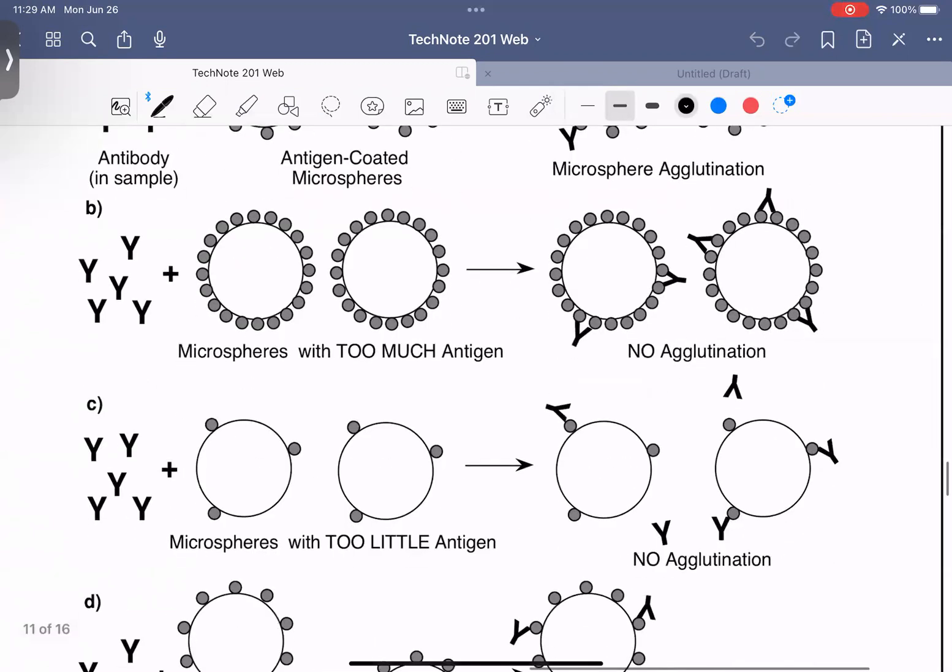What happens if you have added too much antigen to your microsphere when you created the sample? So this is situation B. And as you can see, there's so much antigen on your sample that there's no opportunity to agglutinate because they're so packed closely together. The antibodies can just bridge on their own microsphere.